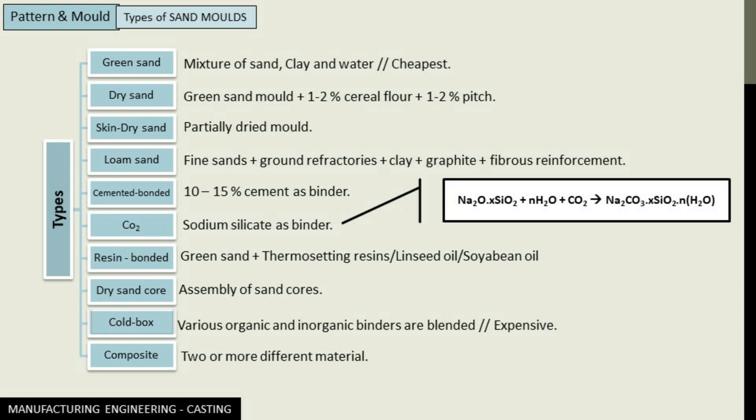Next we have cold box mold process. Here various organic and inorganic binders are blended into sand to bond the grains chemically, which imparts greater strength to the mold. This kind of molds are dimensionally more accurate than green sand molds, however they are very much expensive.